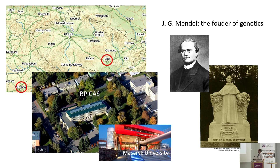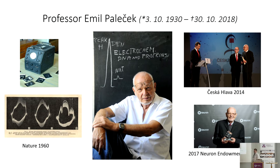A piece of history is linked to the name of Johan Gregor Mendel, the founder of genetics — the man who discovered the laws of heredity. We in Brno are very proud of that. Another big name is Professor Emil Palecek, my former mentor, who was at the beginning of the electrochemistry of nucleic acids. Nucleic acids make a link between Mendel and Palecek because heredity is one of the functions of nucleic acids.